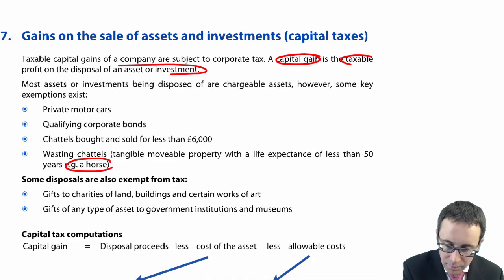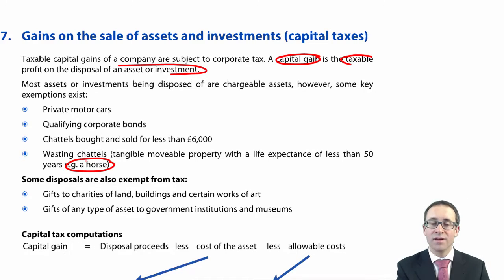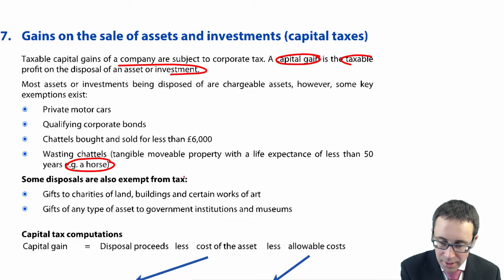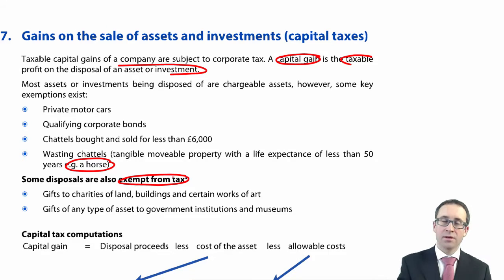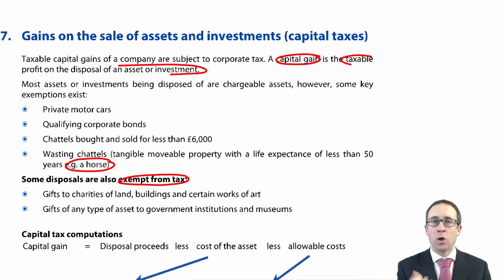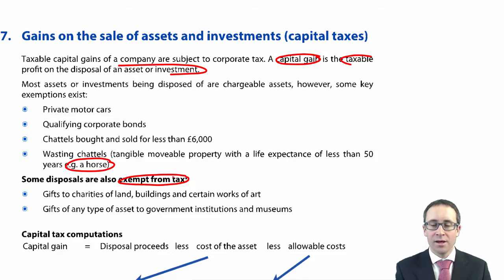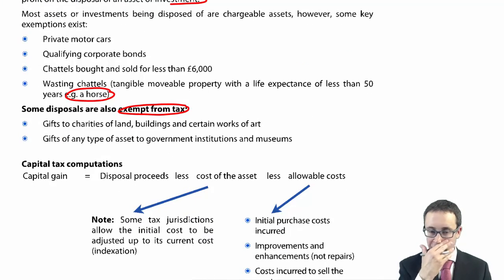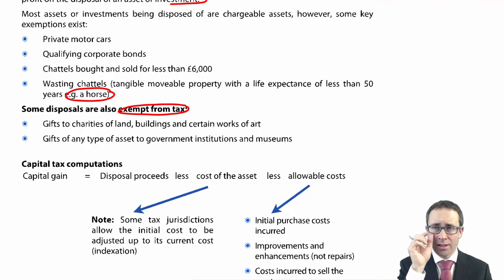A wasting chattel is one with a life of less than 50 years — for example, a horse. Other assets are also exempt from capital gains tax, essentially because they are a gift. If you have gifted land, buildings, or works of art to a charity, or gifted assets to the government, institutions, or museums, there will be no gain calculated upon it.